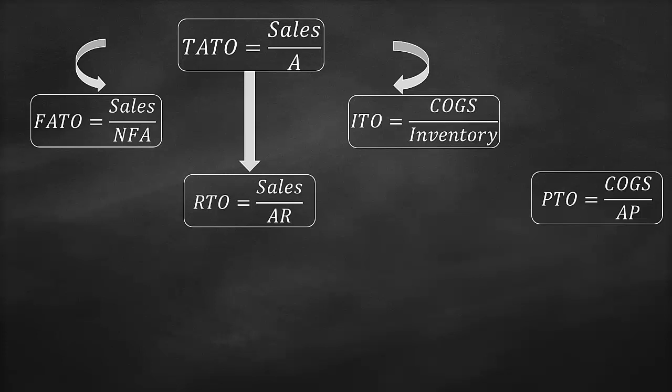We could convert the turnover ratios of the receivables turnover, inventory turnover, and payable turnover into days. The receivables turnover ratio could be expressed as the days sales outstanding ratio, which is 365 divided by the receivables turnover ratio.